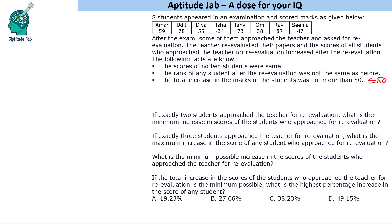To solve this question, let us first arrange these students in descending order of marks. The highest is 87, then 78, 73, 59, 55, 47, 38, and 34. The initial ranks are 1, 2, 3, 4, 5, 6, 7, and 8.